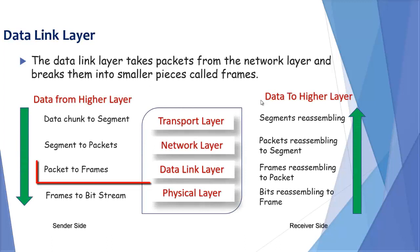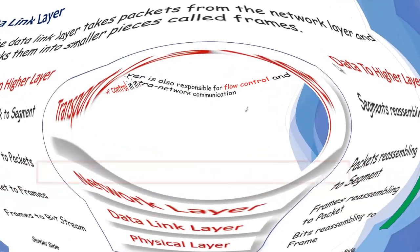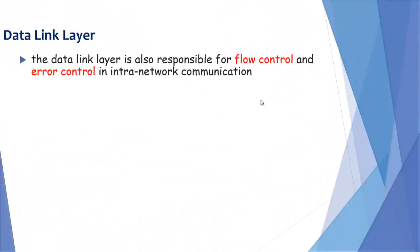Referring to the graphics — data link layer converts packets to frames at sender side, and at receiver side these frames are reassembled to packets.